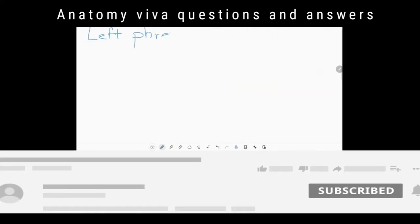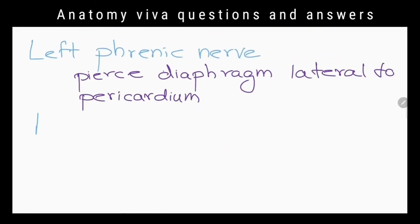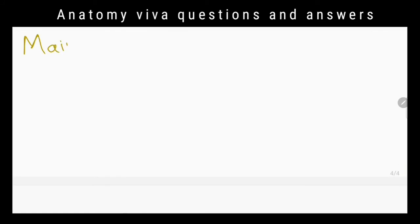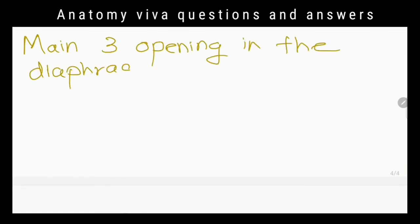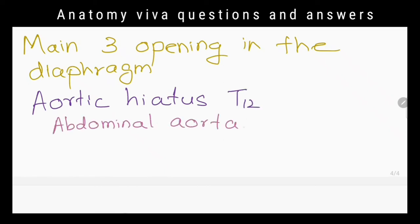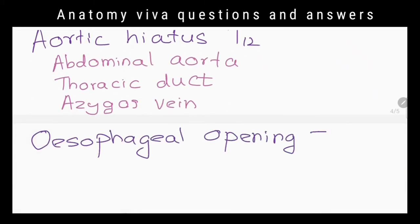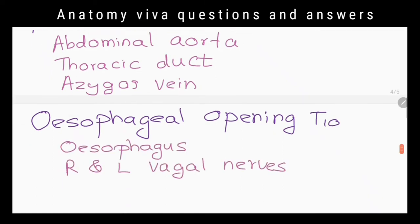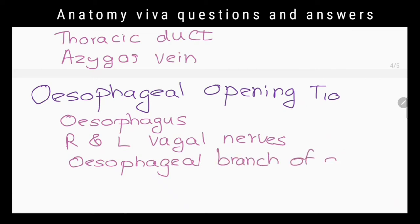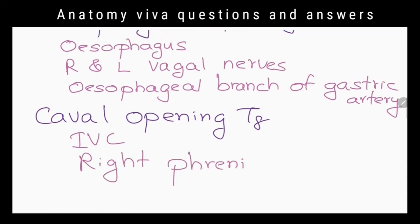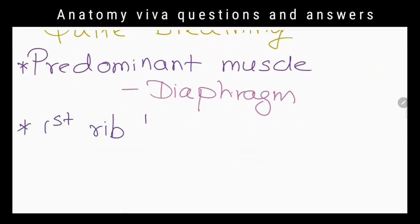How do these nerves enter the abdominal cavity? The left phrenic nerve pierces the diaphragm lateral to the pericardium. The right phrenic nerve passes through the caval opening. What are the other two main openings in the diaphragm? The aortic hiatus at the level of T12 transmits the abdominal aorta, thoracic duct, and azygos vein. The esophageal opening at T10 transmits the esophagus, right and left vagus nerves, and esophageal branches of the left gastric artery.